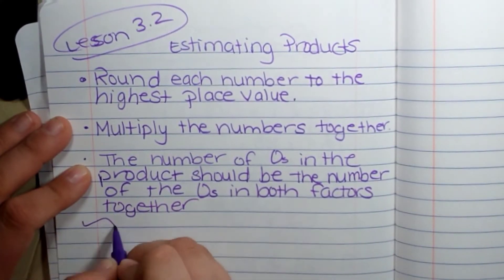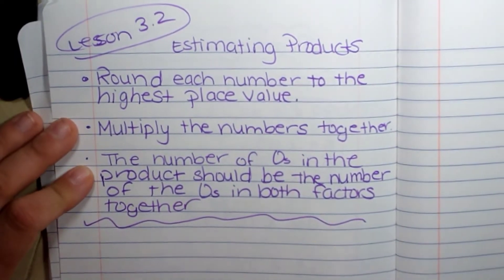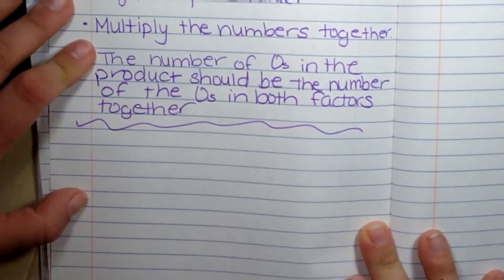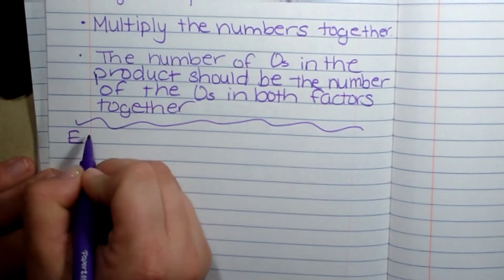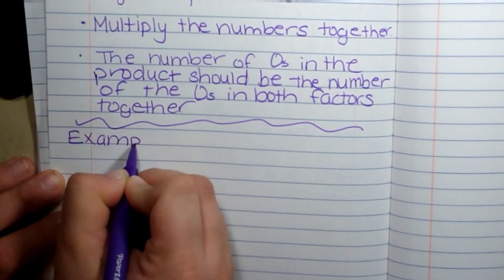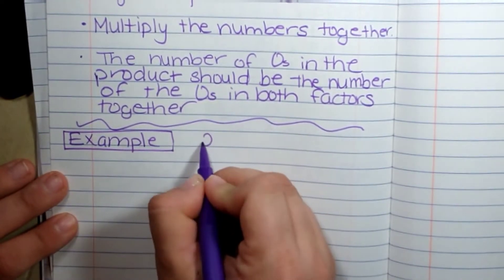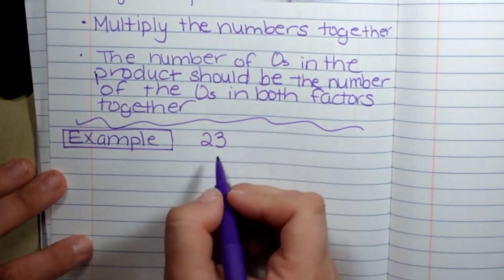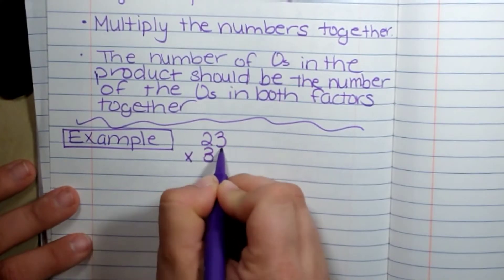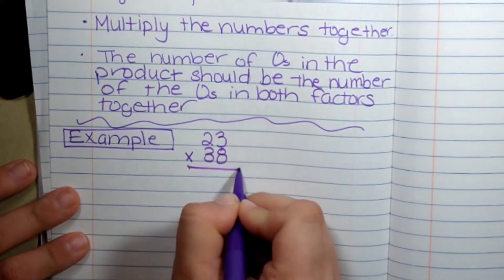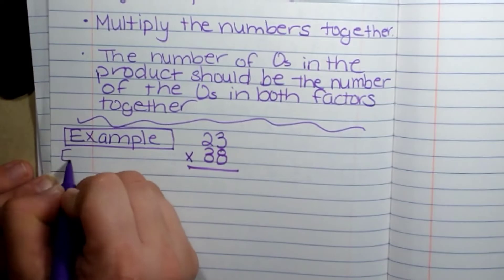Let me give you a couple examples. If I'm asked to estimate, I'm not asked to find an exact answer. I'm finding something that is close to it. So if I'm multiplying 23 times 38 and I'm told to estimate the product.